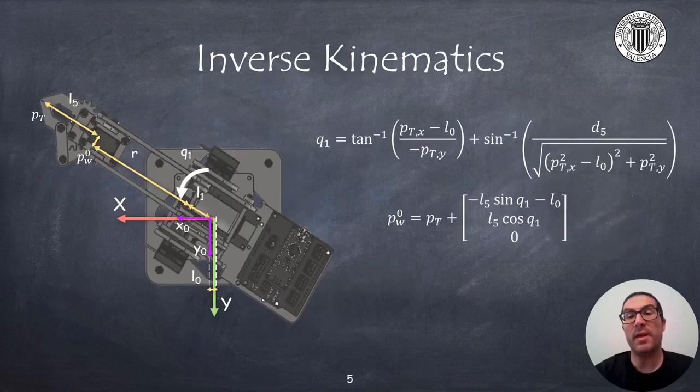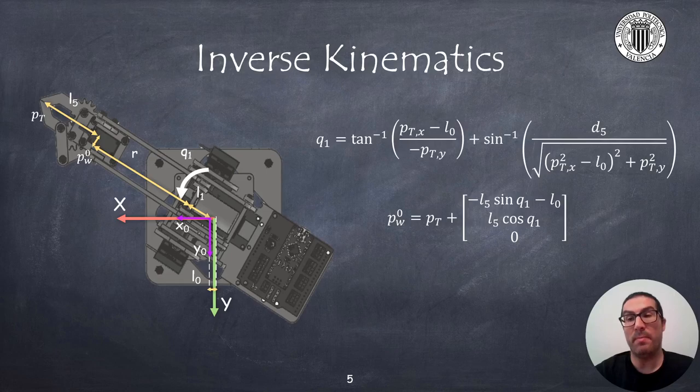We will solve the inverse kinematics of the robot in three parts. In the first part we compute q1, then we compute angles q2 and q3o, and finally we will compute the angle q3.